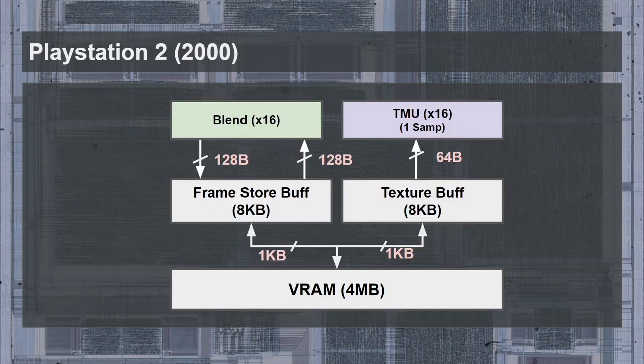The memory system includes two sets of buffers — one for color and depth, and one for textures — both 8 kilobytes in size. They are joined to the 4 MB VRAM through a link that can transfer 1 kilobyte per cycle. The blend stage of the 16 pixel pipelines is connected directly to the frame store, allowing up to 128 bytes to be read and written each cycle. The 16 texture samples connect to the texture buffer, which can read up to 64 bytes per cycle. The frame store access requires pixels to be accessed in blocks with set alignment, and the textures likely have the same limitation.